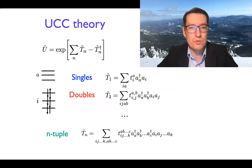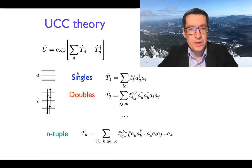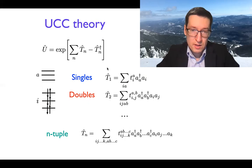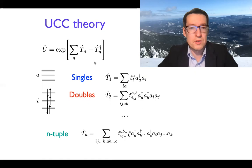So how do we build the unitary coupled cluster theory? We start with the one-electron picture, where we have occupied and unoccupied orbitals. Then we can construct single excitations, double excitations, and higher excitations. In practice, people usually stay within singles and doubles because the power of current quantum computers is not yet high enough to handle higher levels.